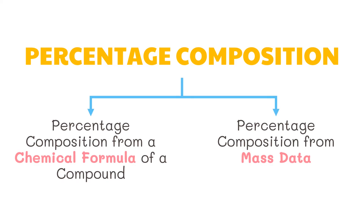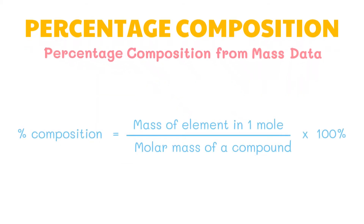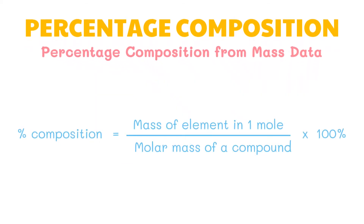That was the first way of getting the percentage composition — through the chemical formula. The other way is from given mass data. Percentage composition can be calculated given the masses of each of the elements present in a compound. We will still use the same formula with little changes: instead of mass of element in one mole, it will be mass of given element, and instead of molar mass of compound, it will be mass of compound.